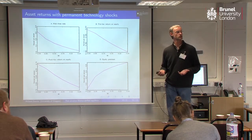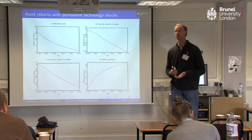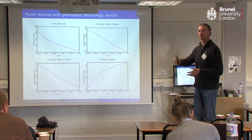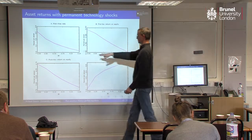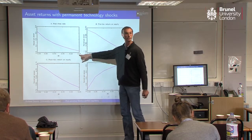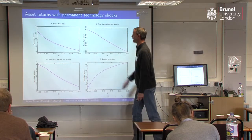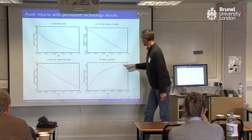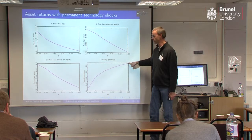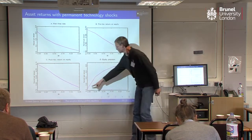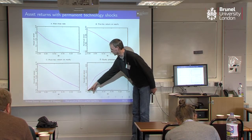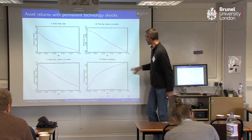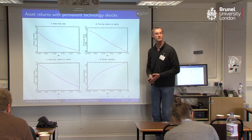Now let's add permanent technology shocks. I had a highly persistent technology process previously — now let's make that a random walk. I've got to normalise my model and resolve it; I can only solve it for a largest value of theta of about minus 0.25. But again, we get a decline in the risk-free rate and declines in the pre- and post-tax returns on equity. But we're getting a much larger equity premium. Permanent technology shocks by themselves give you a larger equity premium than in the case where the shock was transitory.